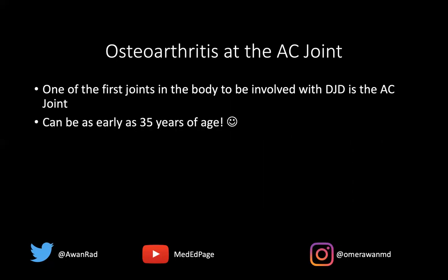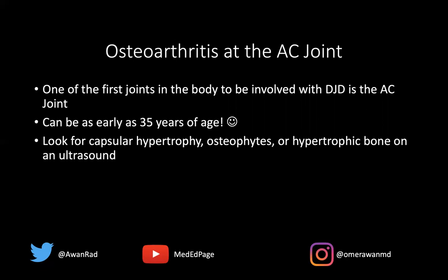Even patients up to 35 years of age can be affected. I'm 41 years old — if I did an x-ray on my shoulder, there may be osteophytes and subchondral cystic change at the AC joint, and that wouldn't be uncommon to see. Other larger joints like the knee and hip typically show osteoarthritis in patients 50 or 60 years old, certainly not 35. But in the AC joint, you can get it as early as 35 years of age.